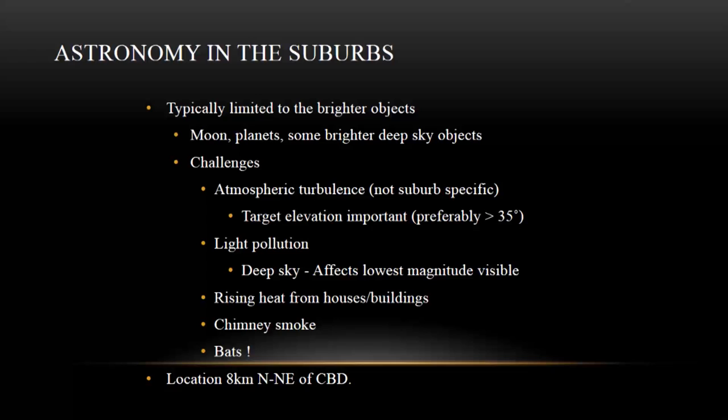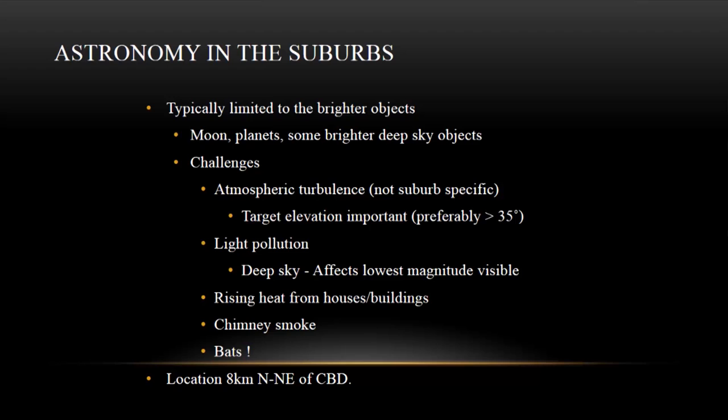Moving back to the presentation — that's really the biggest challenge. What I've found, especially in the suburbs, is that if you want to start reducing the amount of atmospheric turbulence, you want to start looking at objects which are above around the 35-degree elevation mark. Anything lower than that, the atmospheric turbulence is quite severe. You can still get some good images if the object is bright enough, but you'll get optimal results as the object moves higher in the sky.